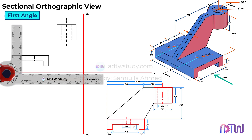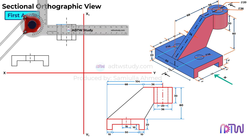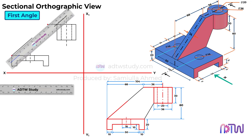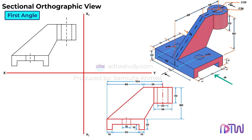Moving on, let's draw the web portion of the object. This inclined line of the section connects to the point that is 36 mm away from the center of the hollow cylinder. So, we draw a horizontal line of 36 mm from the center of the cylinder as shown. Finally, connect these points using an inclined line, and then join these other two points to complete the shape. With this, the front view of the object is complete.